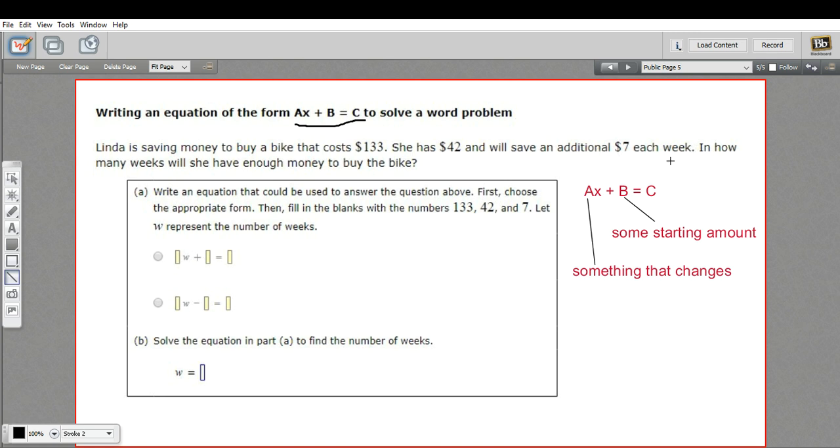So this is what's changing according to the time period. So the time period here is weeks, and you can see in the problem here, they're using w as the variable instead of x. And that's fine, we can use any letter we want. W stands for weeks, I guess. The question is, in how many weeks will she have enough money to buy the bike?